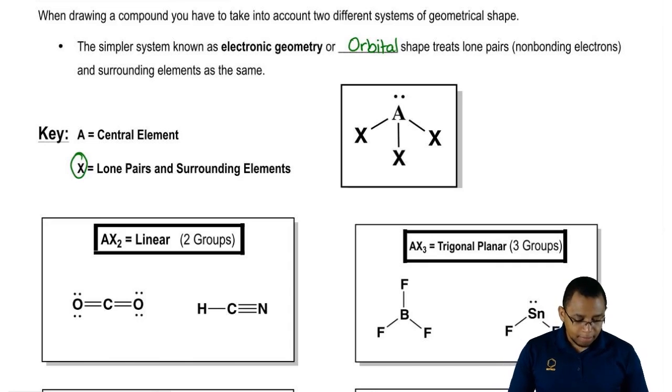If we take a look at this compound, this made-up compound, we have AX3. A is our central element. Then we have three surrounding elements around it and it also has a lone pair. We're going to treat the lone pair and the surrounding elements as the same, so we're going to have AX4.